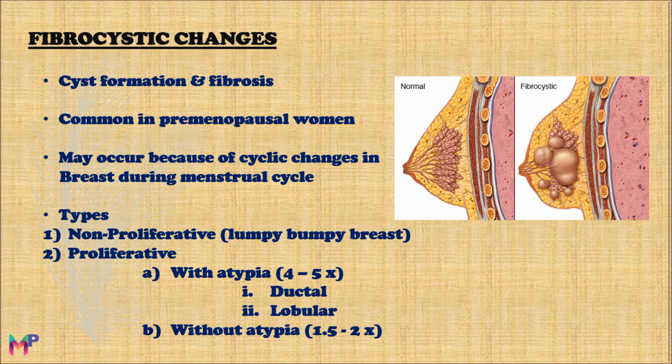Fibrocystic changes appear as a lumpy, bumpy breast, because lumps appear most commonly in the upper outer quadrant, making the breast feel bulky. The non-proliferative type of benign epithelial lesion is the most common type in females, so we will discuss it in detail. The proliferative type is of less significance as it is associated with carcinoma development.